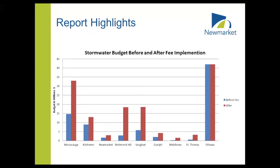The other highlight was seeing whether municipalities, once they implemented a fee, simply changed how they collected the fee or actually increased the amount of funding they were getting. Ottawa was pretty much the only one that didn't start collecting more money — they just switched to the fee to make collection more fair. Most other municipalities have around a 10-year phase-in for their fee to achieve sustainable funding, with most doubling or tripling their stormwater budgets over that timeframe. Newmarket has a six-year financial plan where we are phasing in those costs, and the fee will increase annually to achieve that.